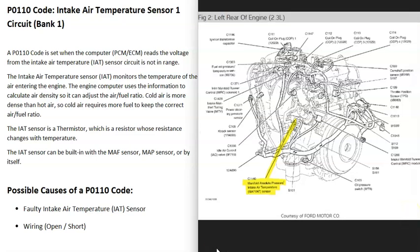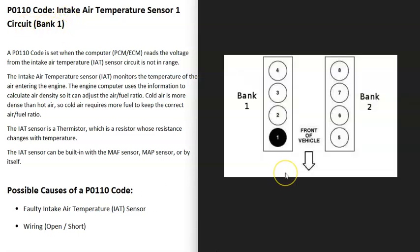And also, sometimes there could be more than one intake air temperature sensor. For example, inside this code, this is saying bank one. And if you have a V6 or V8 engine, bank one is always the side of the engine with the number one cylinder. So you find the number one cylinder on your engine, and that side's going to be bank one. The opposite of that would be bank two. But this would be the side of the engine that's having the problem. And in some cases, there's more than one intake air temperature sensor.